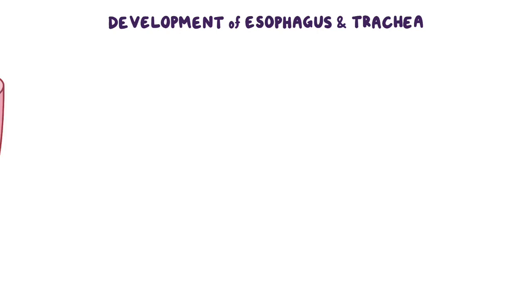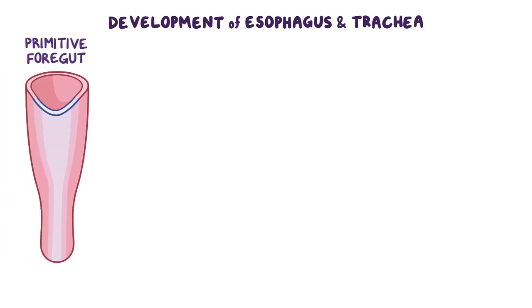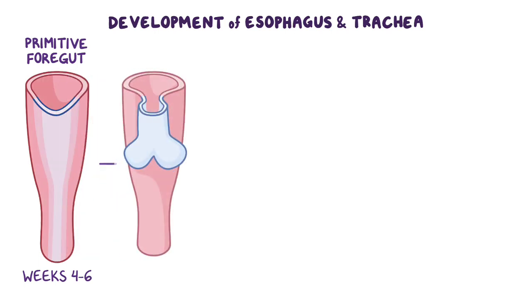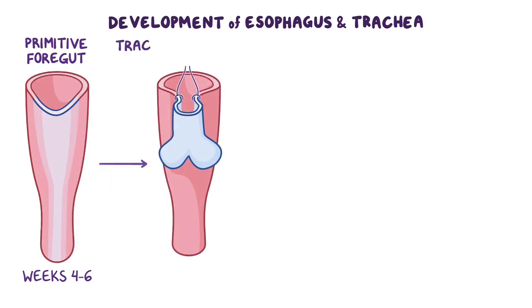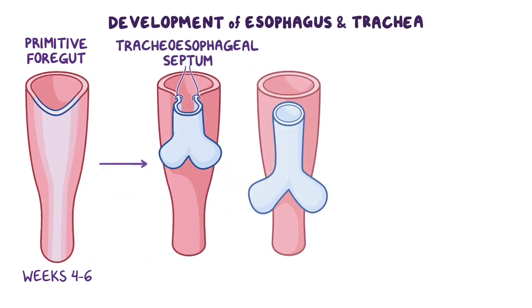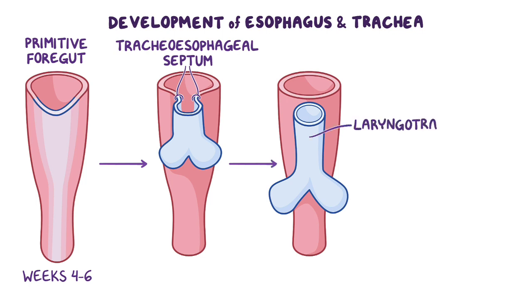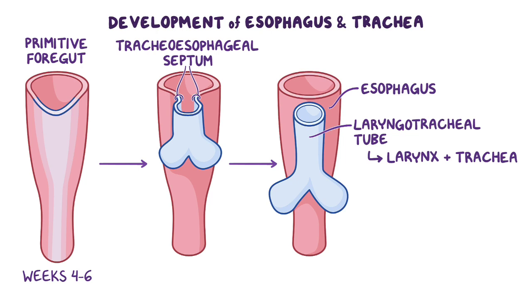Let's now quickly review the normal development of the esophagus and trachea. They both form from the primitive foregut between weeks 4 and 6 of intrauterine development. Afterwards, they are separated by the tracheoesophageal septum, which divides the foregut into the laryngotracheal tube at the anterior side and the esophagus at the posterior side. Eventually, the laryngotracheal tube develops into the larynx and the trachea, while the esophagus elongates and connects to the stomach.